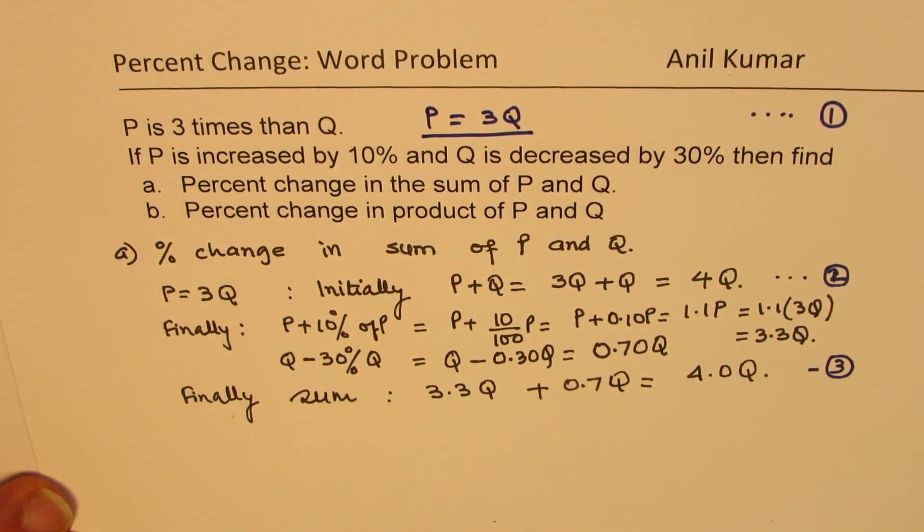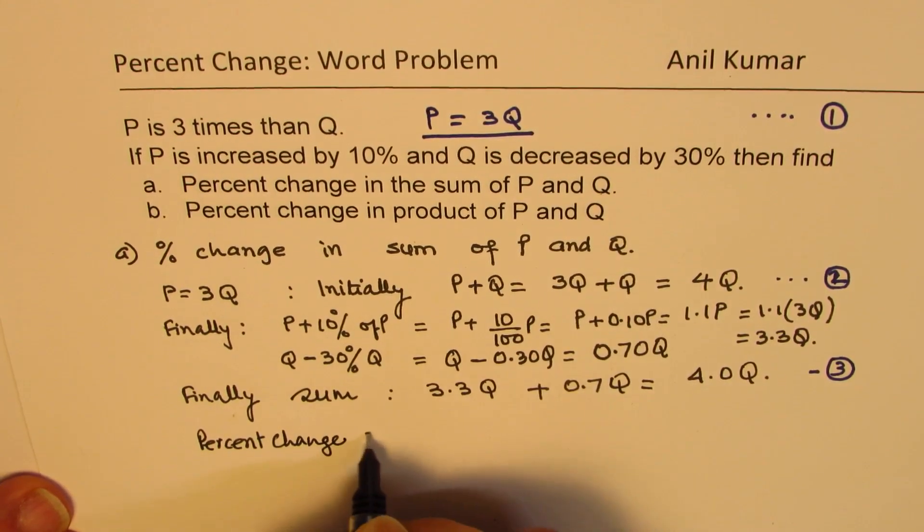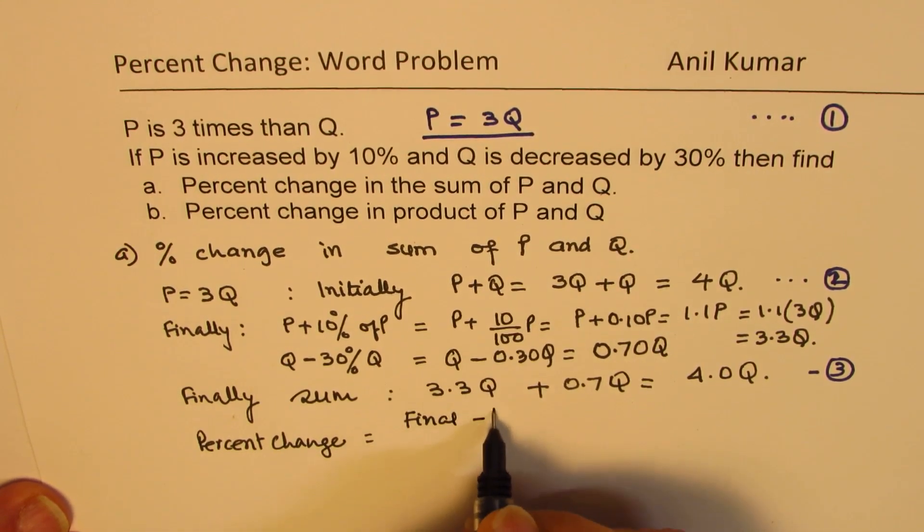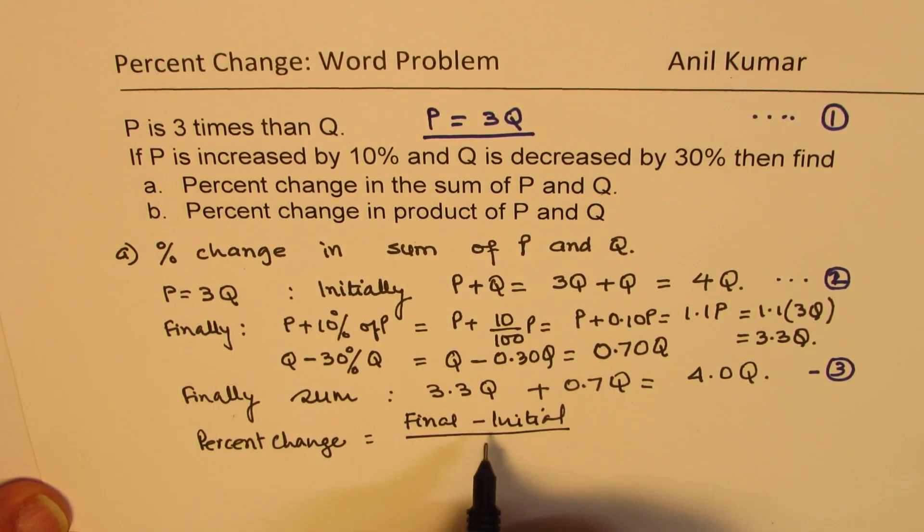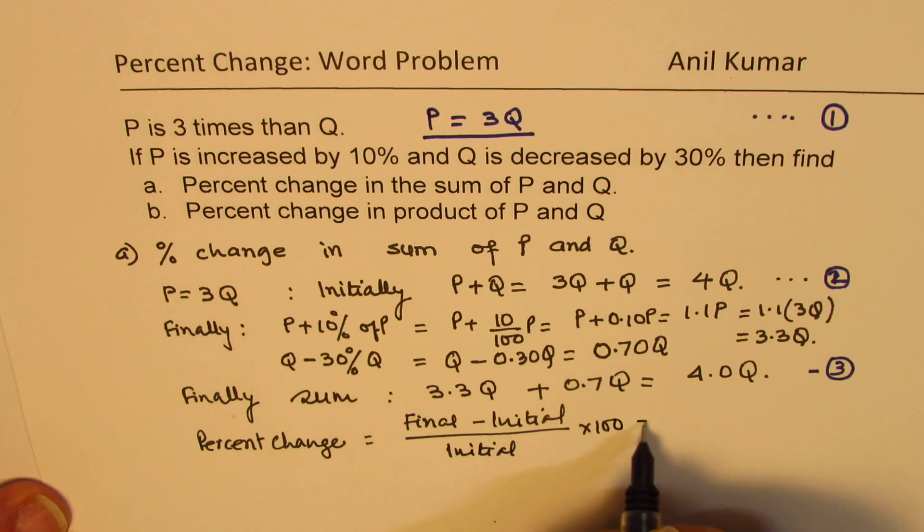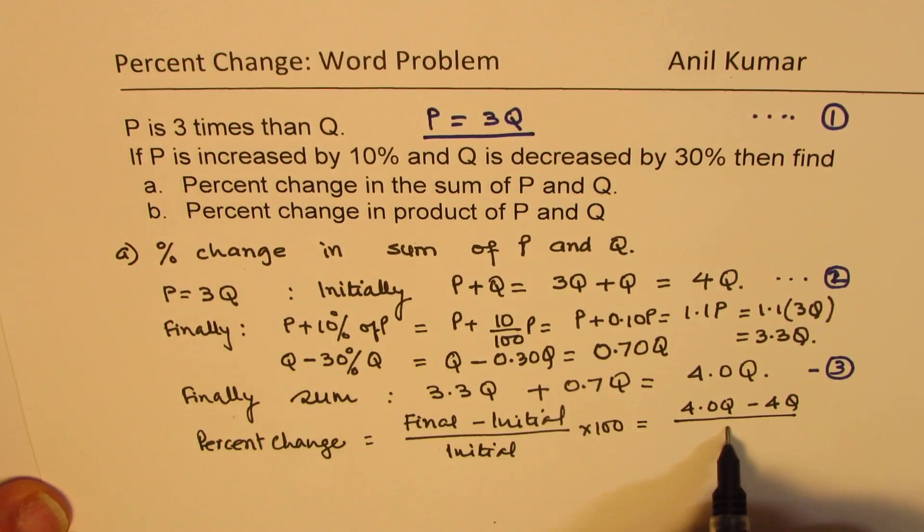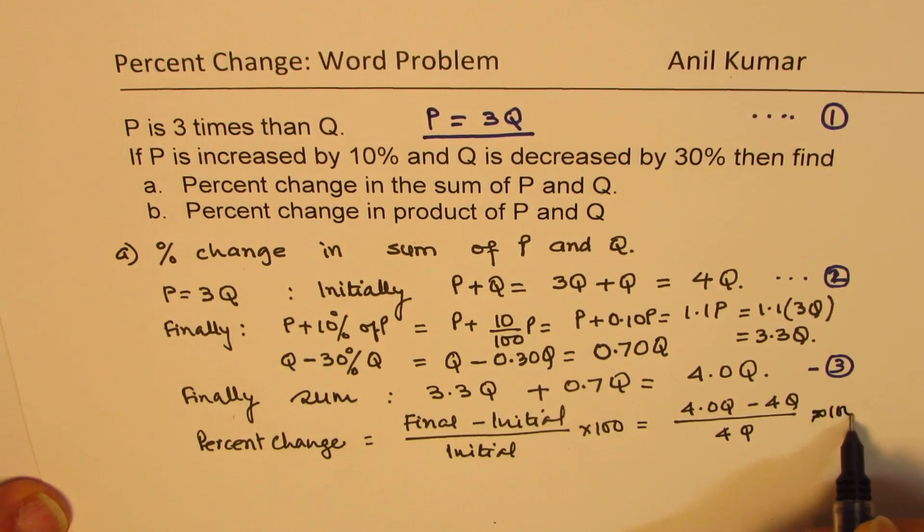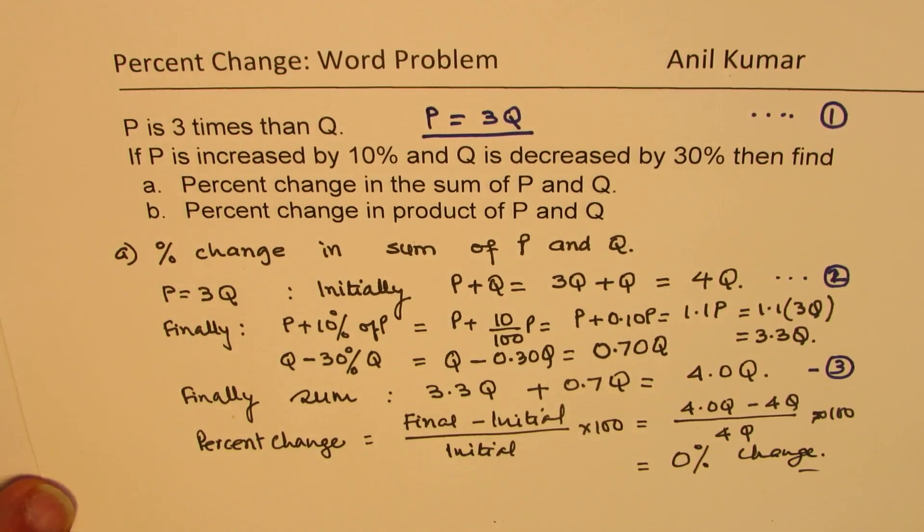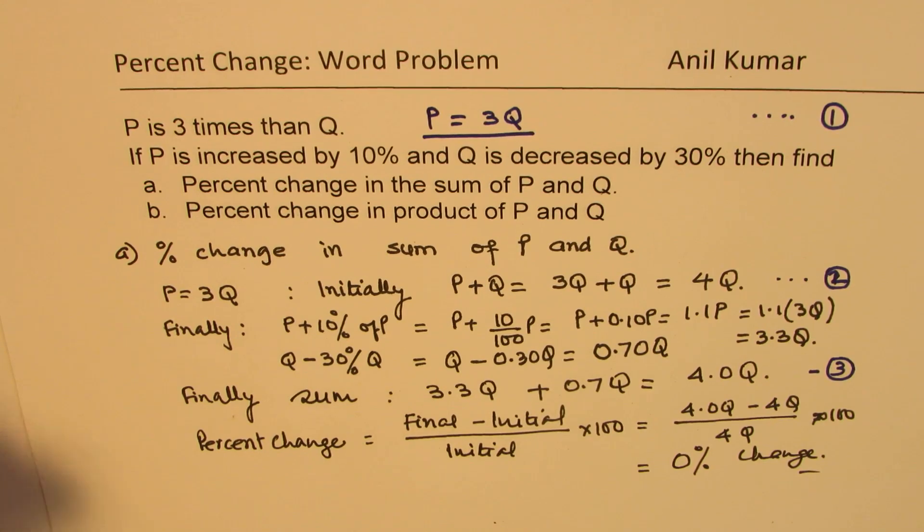Now, we need to find percent change. Percent change is final minus initial. That means the change. This is the change over initial, whatever we had, times 100. So in our case, it is 4.0Q minus 4Q over what we had is also 4Q and times 100, of course. And what we get this as 0% change. So as far as the sum is concerned, there is no change. The value of P is increased, but Q is decreased. And so there is no change. Now, let us see what happens to the product of P and Q on the next page.